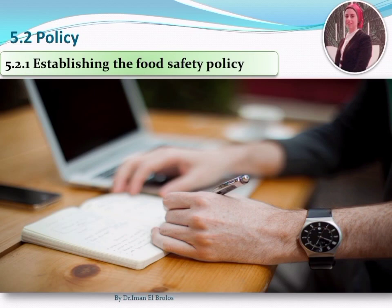ISO 22000 requires the food safety policy to be appropriate to all purposes and the context formulated by the organization. The organization must be committed to: providing a framework for the objectives of the food safety management system; satisfying applicable food safety requirements including regulatory and statutory requirements; addressing external and internal communication; ensuring continual improvement; and ensuring competency related to food safety.